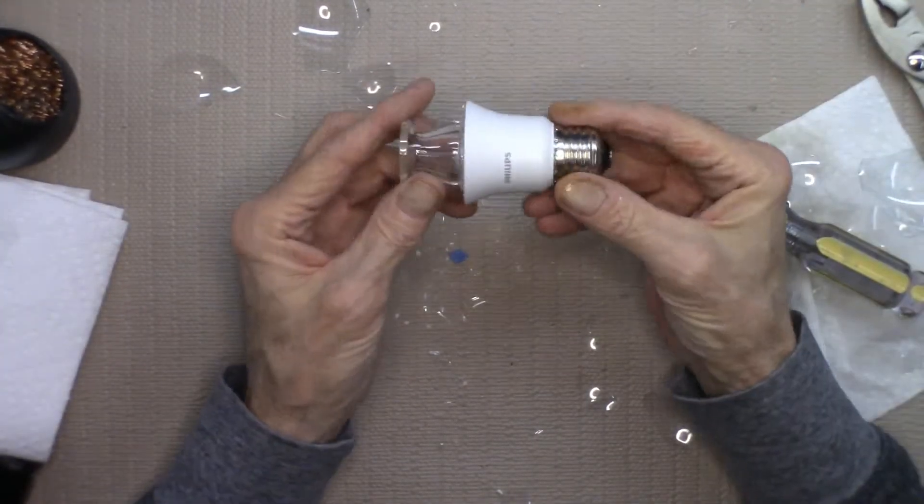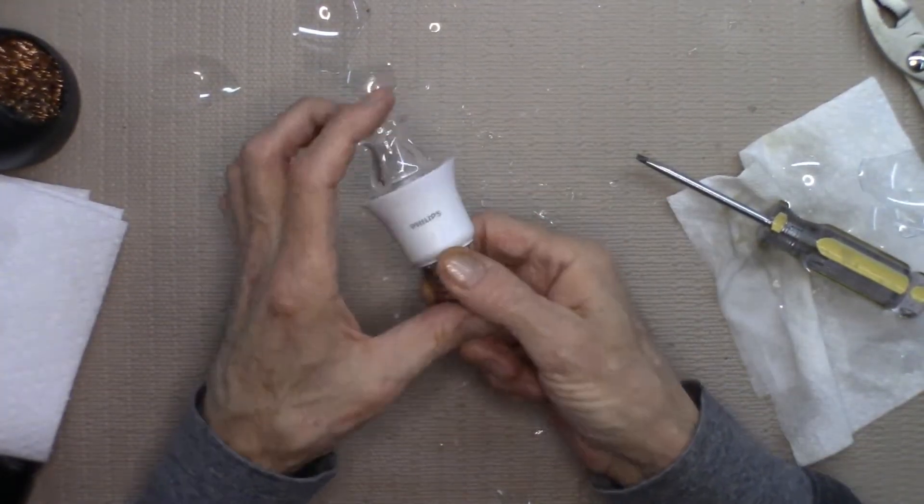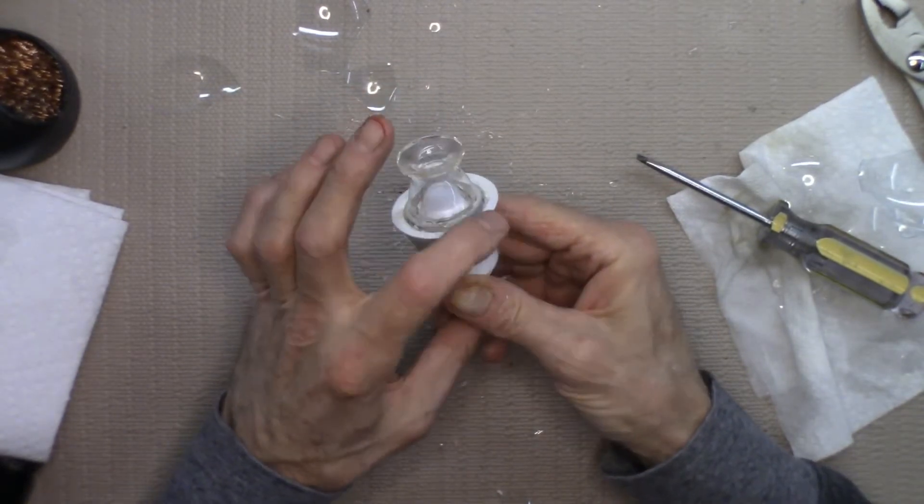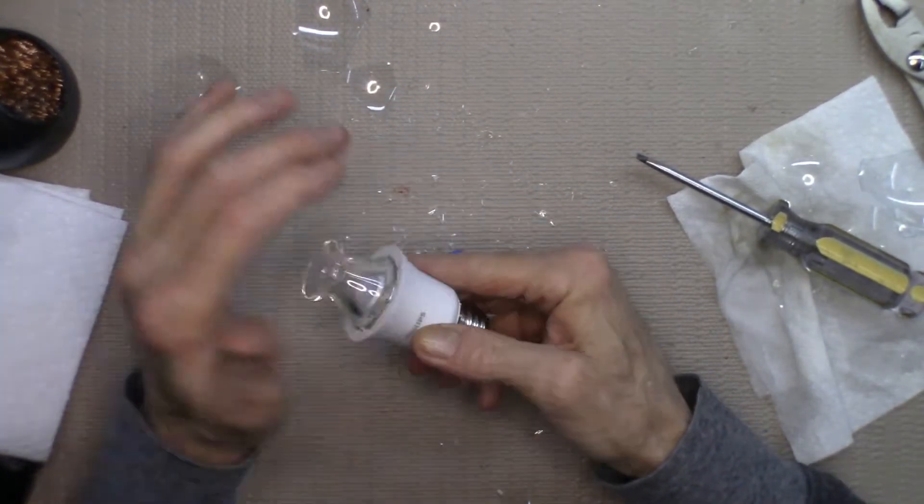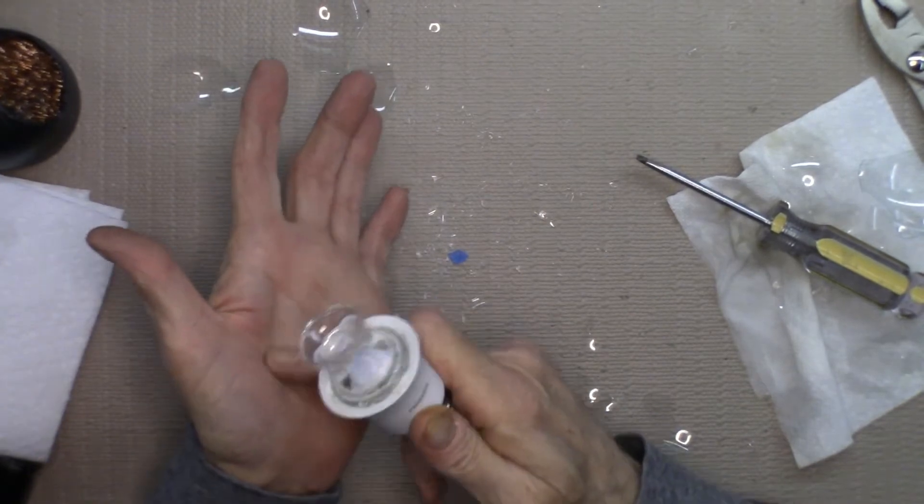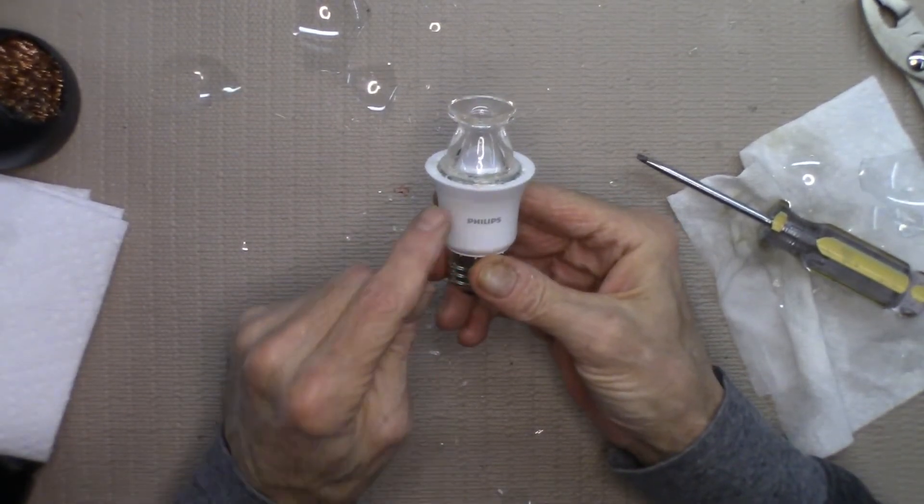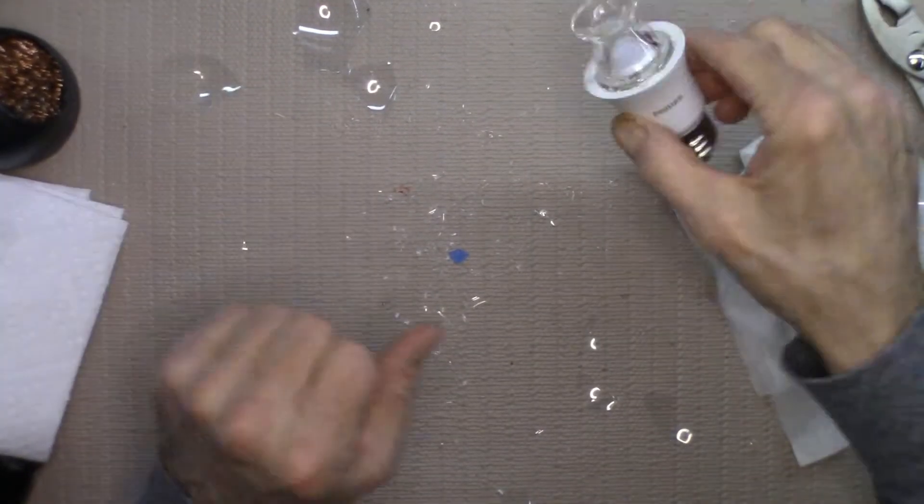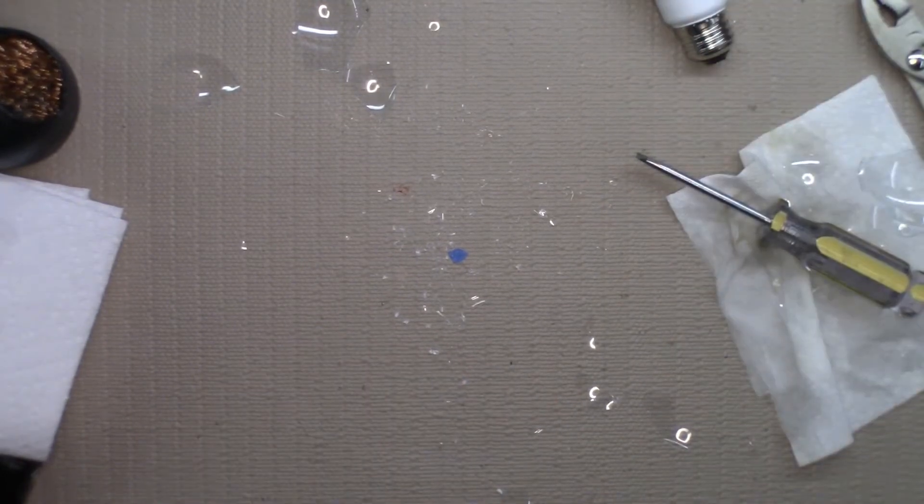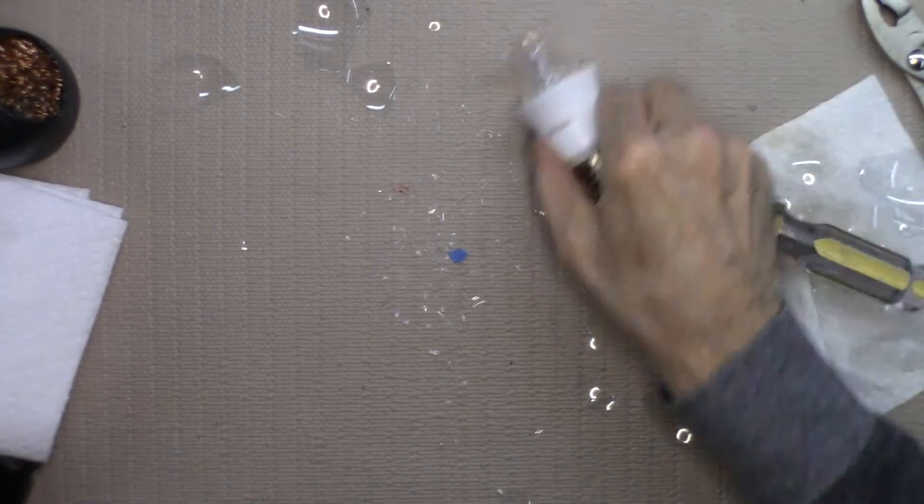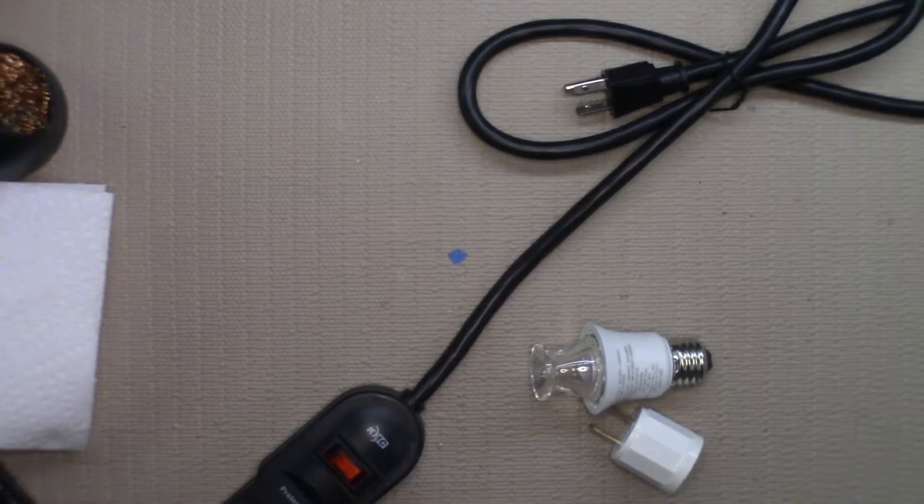So there you go, that's how to get the water out of these Philips LED dimmables with the globe without destroying the lamp. I hope you liked it. Worked for me. I think I've given it enough time to dry.